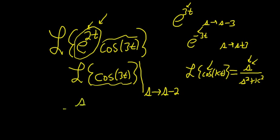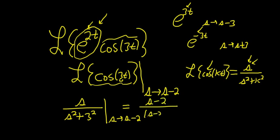All right, so here it's going to be s over s squared plus, and then your k is your 3 here. So it's 3 squared, and then we still have the shift, s to s minus 2. Then you just replace all of the s's with s minus 2's. So this is s minus 2, and then s minus 2 squared plus 3 squared.